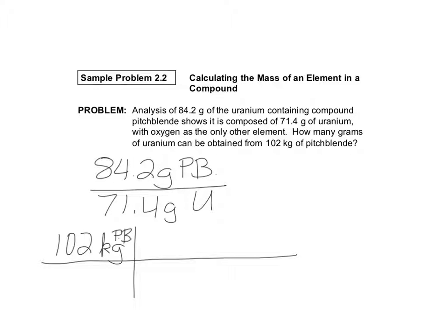So right away I noticed that these are in grams, and my conversion factor is in grams. This one's in kilograms, and so that kilo is a prefix back from chapter 1 that represented 1,000. So what that means is in one kilogram of pitchblende, there's 1,000 of that base unit, 1,000 grams of pitchblende.